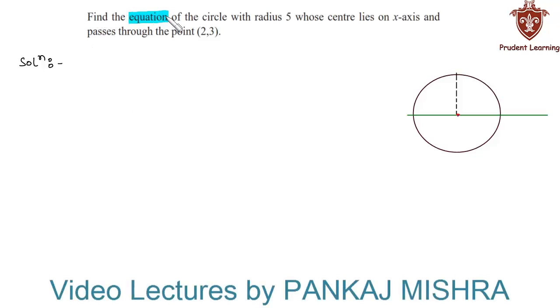Find the equation of the circle with radius 5 whose center lies on the x-axis and passes through the point (2,3). In this problem, we have a circle with radius 5 and its center lies on the x-axis. Therefore, the coordinates of the center are (x,0), since all points on the x-axis have y-coordinate 0.